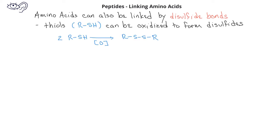A second way amino acids can be connected to other amino acids is through a disulfide bond. In a previous video, we briefly mentioned that thiols, or an SH group on an alkyl chain, can be oxidized to form disulfides.